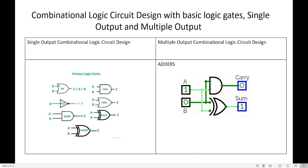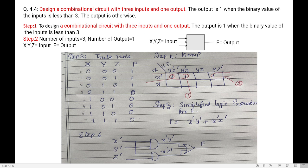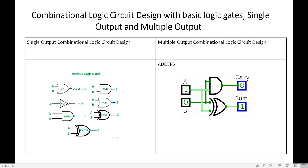A single output circuit has several inputs but only one output — such circuits are called single output combinational logic circuits. A multiple output combinational logic circuit has multiple outputs. Let us first understand how to design a single output circuit before moving to multiple output.